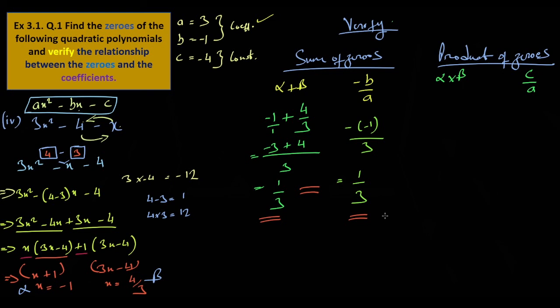Product of zeros: alpha times beta. Minus 1 times 4 by 3 is minus 4 by 3. Multiply by 3.